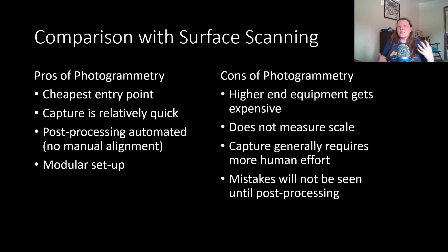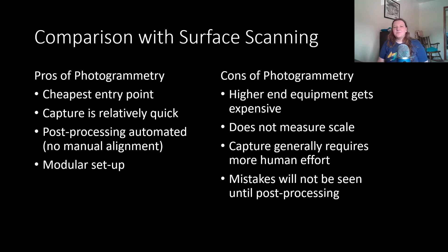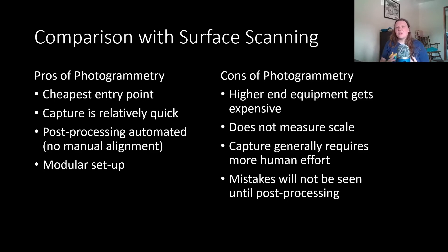Compared with surface scanning, the capture is relatively quick since you're just taking pictures, though it does require a bit more human effort unless you automate the photograph-taking. With surface scanning you tend to just set something down and let it go. One big advantage over surface scanning is that there is basically no post-processing beyond putting your photos in the program and clicking run — you don't have to deal with manual alignment, which I've always had issues with for surface scans. The flip side is that you don't see issues with your photos until the post-processing step, whereas surface scanning shows you real-time data as it lines up.